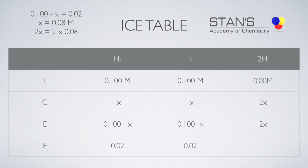Now in the last column, we need to substitute the value for hydrogen iodide. Hydrogen iodide is 2x, so 2 times x is going to be 2 times 0.08. The value is going to be 0.16 moles. So now you have the equilibrium concentration for hydrogen, for iodine, and for hydrogen iodide.